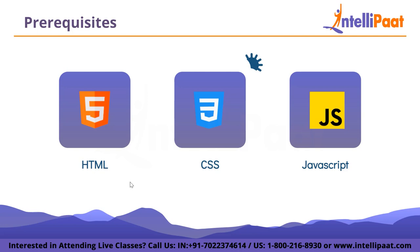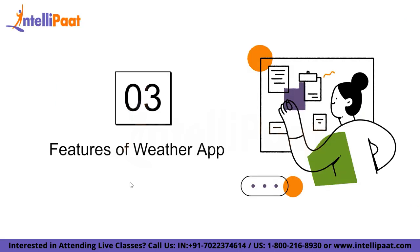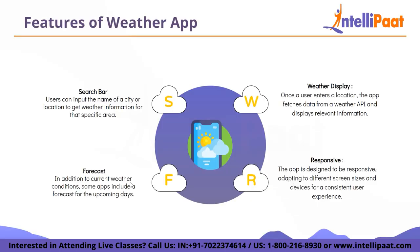Now let's discuss the features of this app. This application will allow users to check current weather conditions for a specific location. It interacts with a weather API to fetch real-time weather data and displays it in a user-friendly interface. The first feature is a search bar where users can input the name of a city or location. Then there's a weather display — once a user enters the location, the app fetches data from the weather API and displays relevant information.